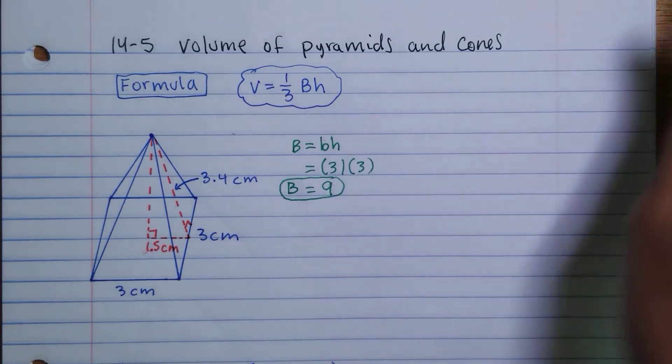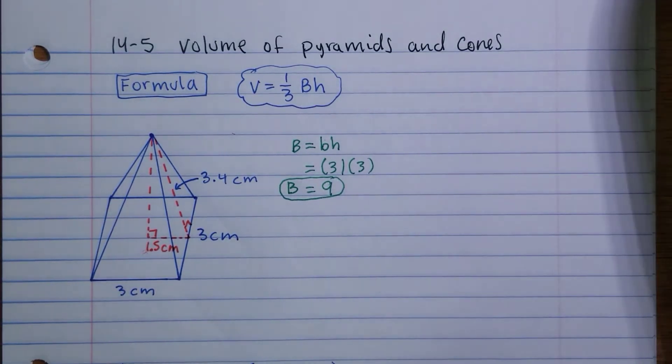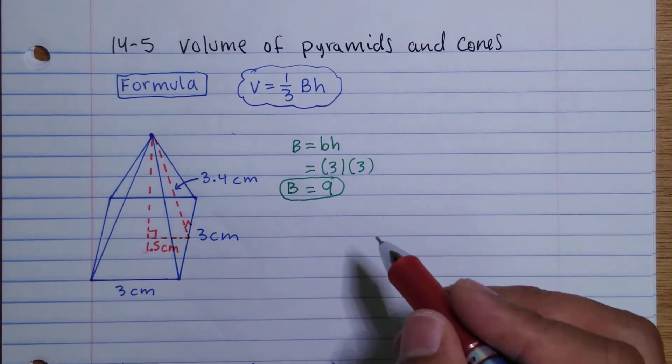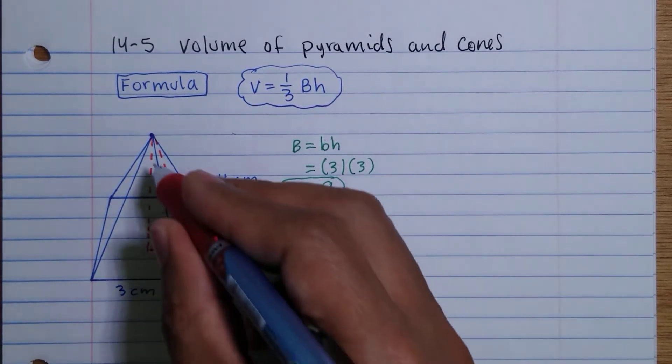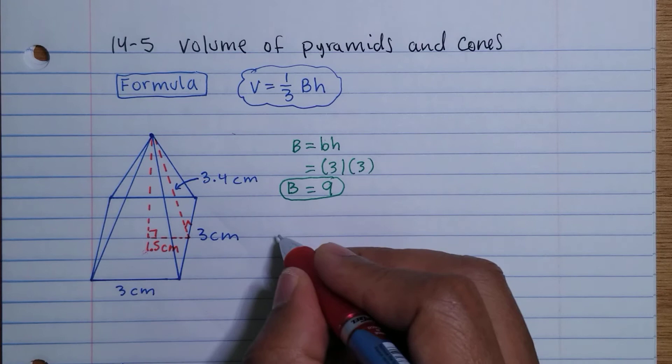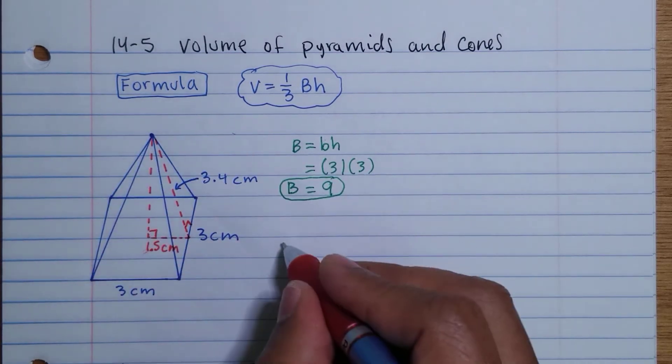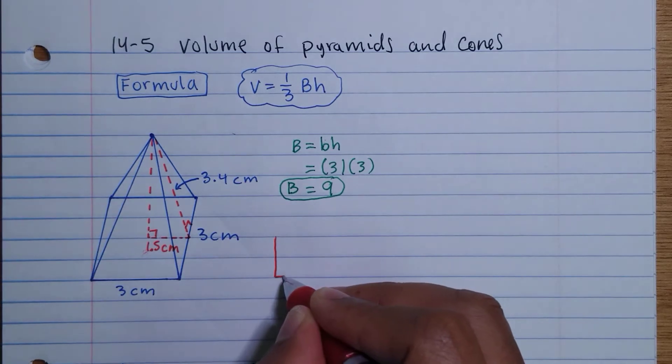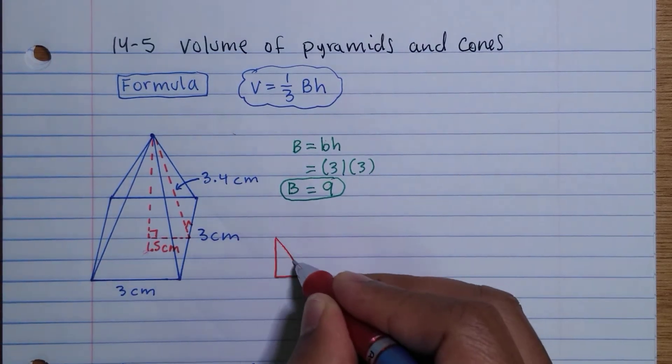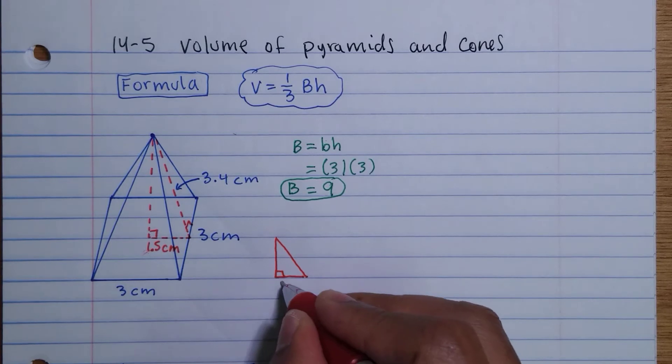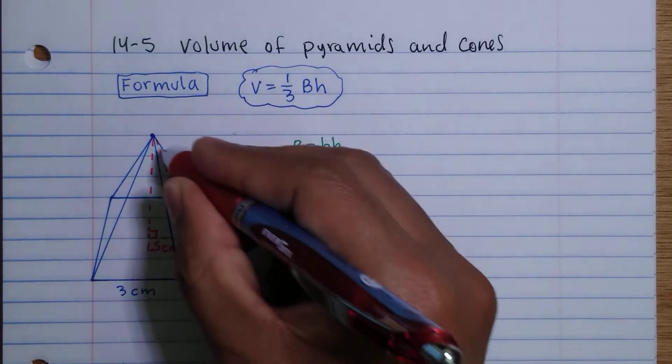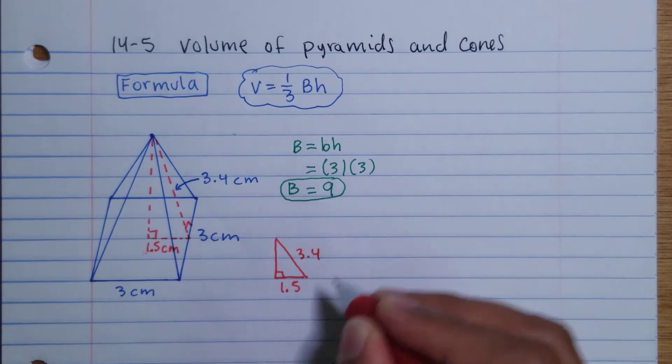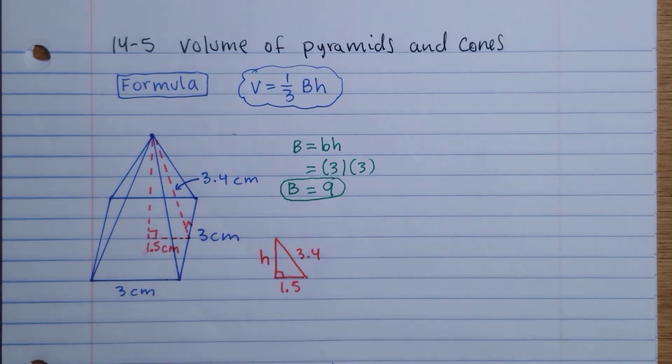Now to find the height, we are going to need to use Pythagorean theorem. I'm going to pull this right triangle inside of that pyramid and draw it smaller. We know this side is 1.5, and this is the slant height, so that's the hypotenuse, 3.4, and this is what we don't know.